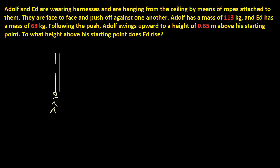That guy is pushing on Ed — or, they are pushing against each other. So this is Ed. And when they push against each other, they swing upwards like this. Adolf swings to maybe like this. And it says Adolf swings upward to a height of 0.65 meters, so that would be 0.65 meters.